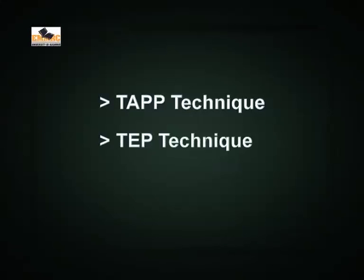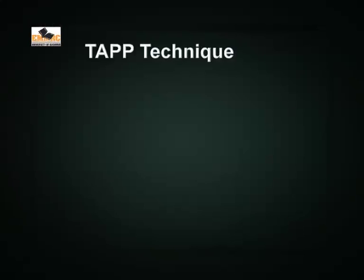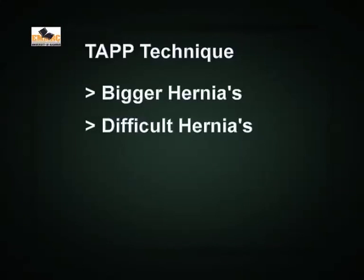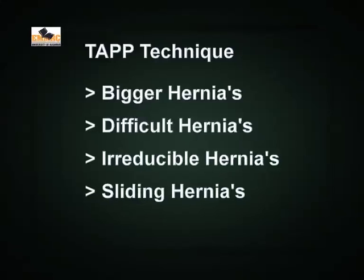As you are aware, two techniques were born — one we call TAPP and the other we call TEP — both endoscopic or laparoscopic procedures. Generally, TAPP achieves a better reputation and is considered a better procedure than TEP, but there are plus and minus on either side. TAPP is for bigger hernias, difficult hernias, maybe irreducible hernias, sliding hernias, and if you want to check whether the other side has a hernia.